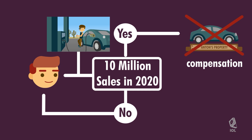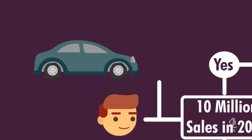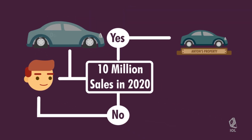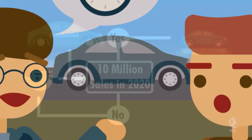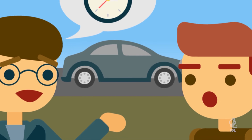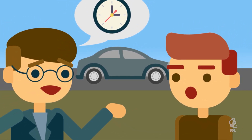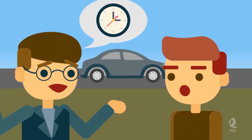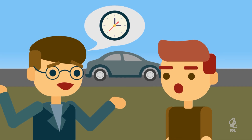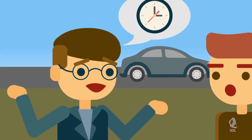What if the car deteriorated before the happening of the condition? If it is without Antin's fault, such as in the case of ordinary wear and tear, then Henry shall bear the impairment when he later fulfills the condition, and Antin will not be liable for damages.